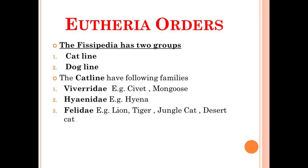The cat line consists of different families. The first one is Viverridae — for example, you can note down the civet and mongoose. The next is Felidae — for example, you can note down lion, tiger, jungle cat, desert cat, etc.